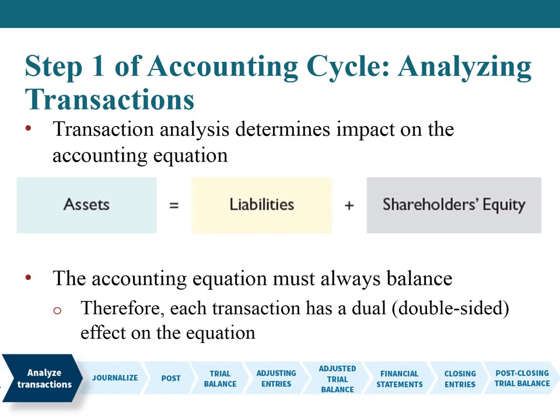Tip — step one of the accounting cycle: analyzing transactions. All transactions or economic events should be analyzed to determine their impact on the accounting equation. The accounting equation is: assets on the left side equal liabilities and shareholders' equity on the right side. The accounting equation must always be in balance. Therefore, each transaction has a dual or double-sided effect on the equation.